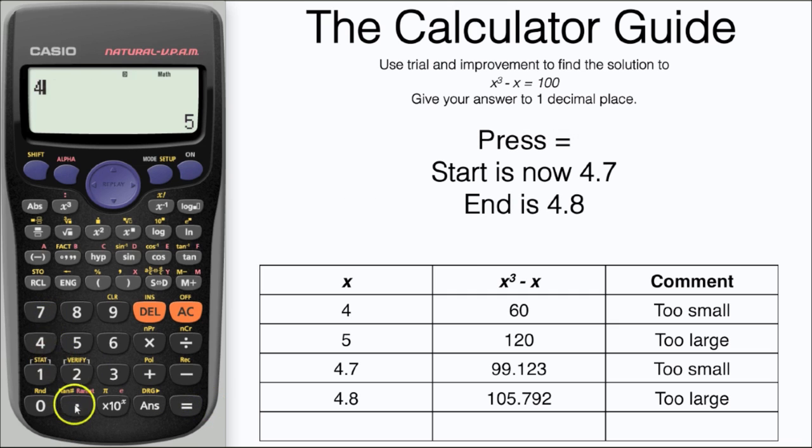Press equals and this time our start value is 4.7, our end value is 4.8, and our step is going to be 0.01 so that we can get values between 4.7 and 4.8. Press equals and here we have our table again.